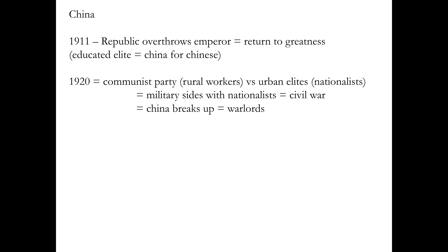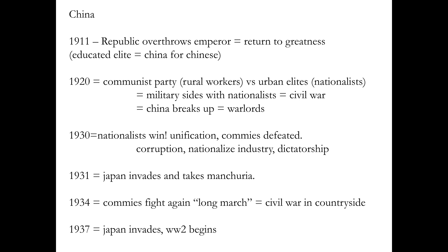This is what happens to China — it breaks into pieces and warlords take over: a warring states period. By 1930 the Nationalists win, conquer the other parts of China, and get unification. The Communists are defeated. Everything is great — except the Nationalists are basically military dictators who nationalize industries. All those capitalists who were on their side because they didn't want communism find that the Nationalists nationalize the industries anyway, with massive corruption: who's going to run those industries? Cronies, friends, family. And people start going — wait, maybe the Communists had an idea.